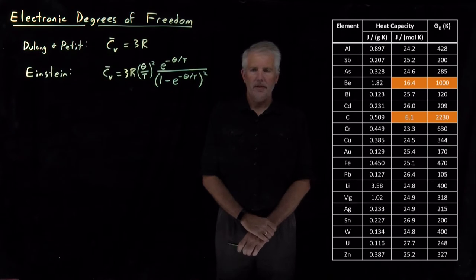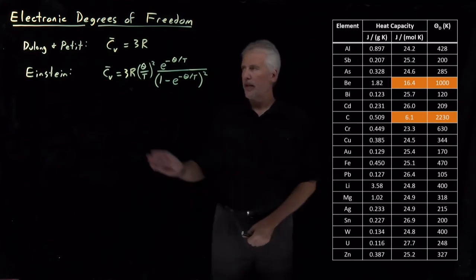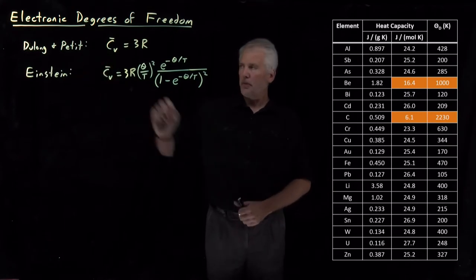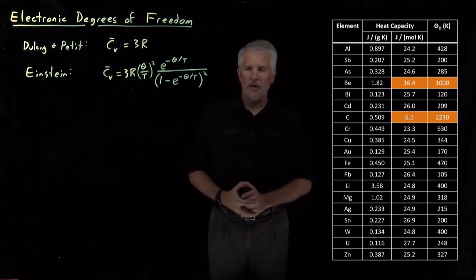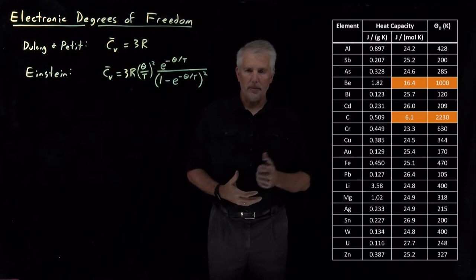Our understanding of heat capacities of solids at the moment is we have this simple prediction by Dulong and Petit, or the Equipartition Theorem, that the heat capacity is 3R. That's true in the classical limit, when the temperature is high enough that the system can be treated classically.